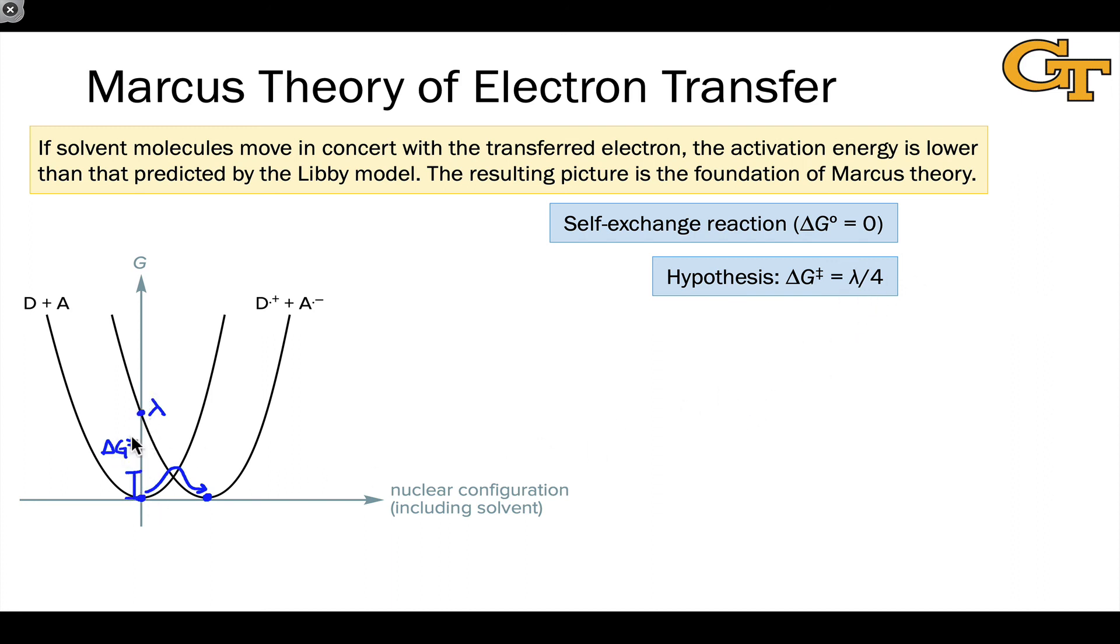That's a geometrical conclusion based on these parabolic potential energy surfaces. Marcus theory predicts that the activation energy associated with electron transfer is quite a bit lower than that predicted by the Libby model.